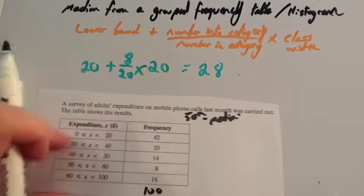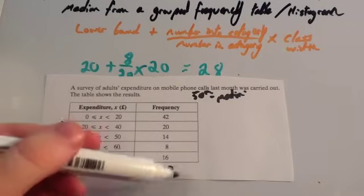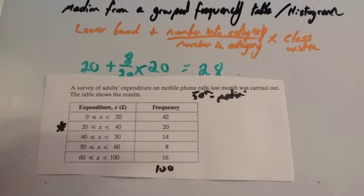That can be used for lower quartile, upper quartile, or any particular value that you're looking for. So, for instance, if I wanted to find the lower quartile in this one, I would divide this by 4. So it would be 25 and I'd look for the 25th person.